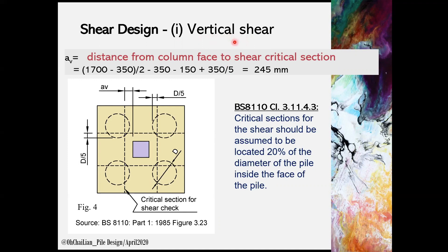The vertical shear is checked against a critical section. As suggested in BS 8110 Clause 3.11.4.3, it is to be assumed to be located 20% of the diameter of the pile inside the face of the pile, or D over 5, as illustrated in Figure 4. AV is the distance from the column face to the shear critical section. In this case, we can take half of the width of the pile cap, excluding the column width, then deduct the pile diameter, deduct the pile extended edge, and plus again the D over 5.